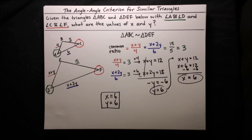So now we know how to use the angle-angle criterion to tell whether two triangles are similar. In the future, we will also learn about some other criteria that we can use to determine whether two triangles are similar.